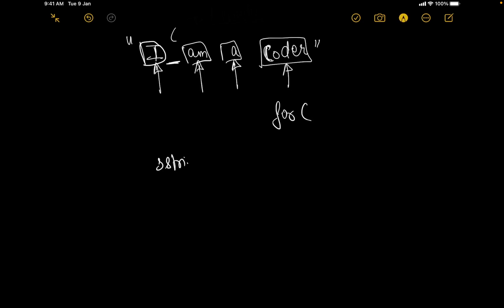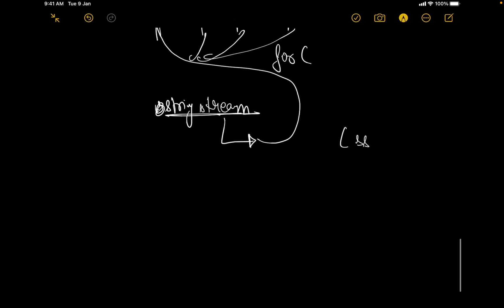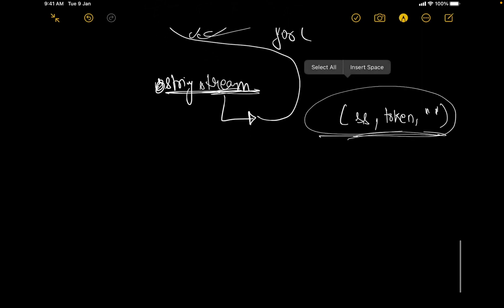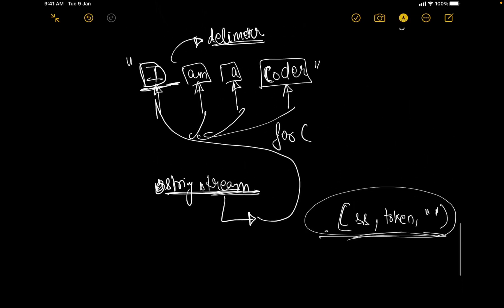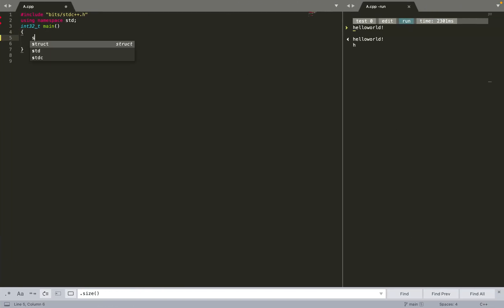You could implement word extraction manually with a loop checking for delimiters, but you can also use string stream. With string stream, you initialize an object, tell it which string to process, where to store the words, and what the delimiter is. It then does the required work and gives you the tokens or words you need. The implementation will make this clearer.